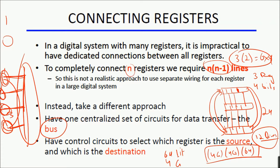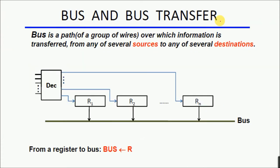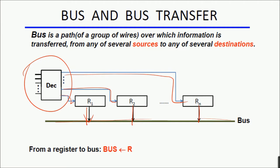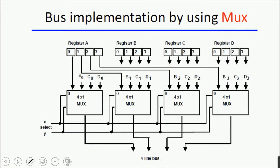Let's see how the bus can be implemented because there are multiple ways. At the organization level we have decided there should be a bus, each register connected to that bus, and a control circuit — maybe decoder-based or multiplexer-based — that can select which register's data has to be transferred to the bus. When we go into the actual component-based details, that is the design level. This bus design is being implemented using multiplexers.